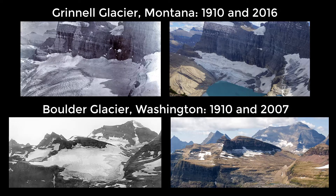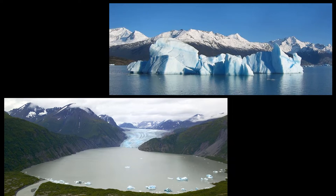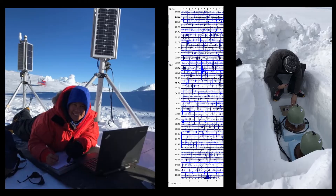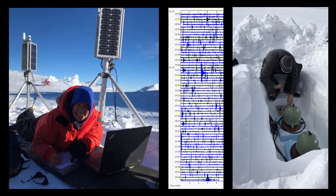For example, seismometers can detect the formation of icebergs along the margins of ice sheets located up to 100 kilometers away, allowing seismologists to track the rate of ice loss.